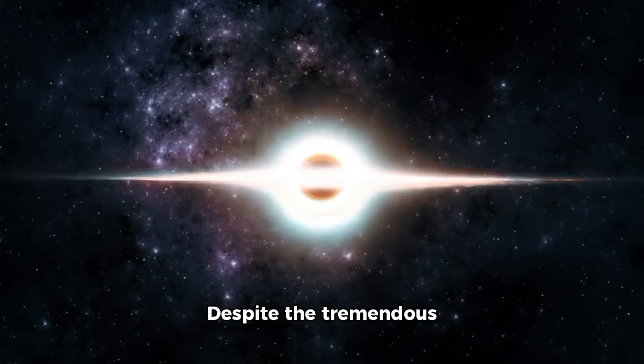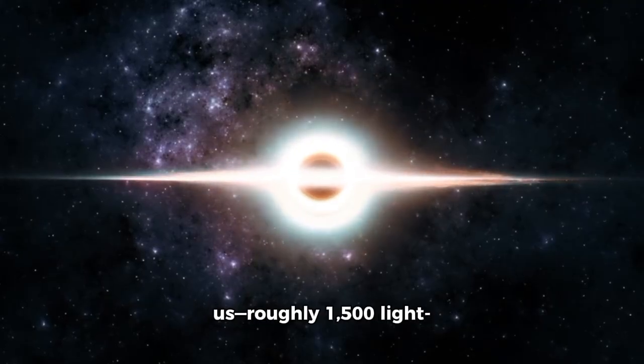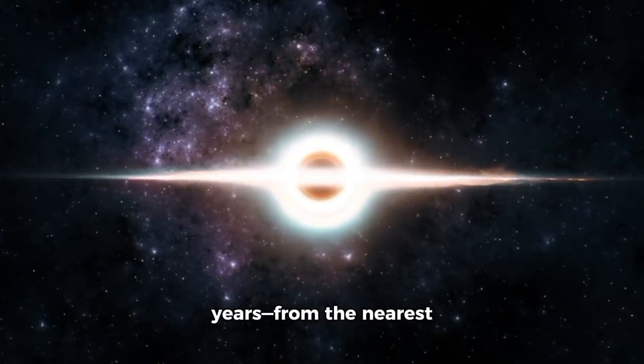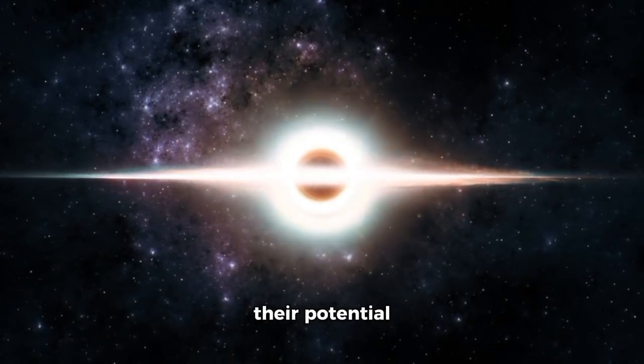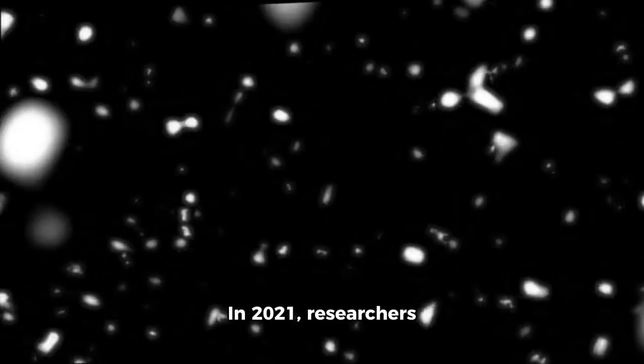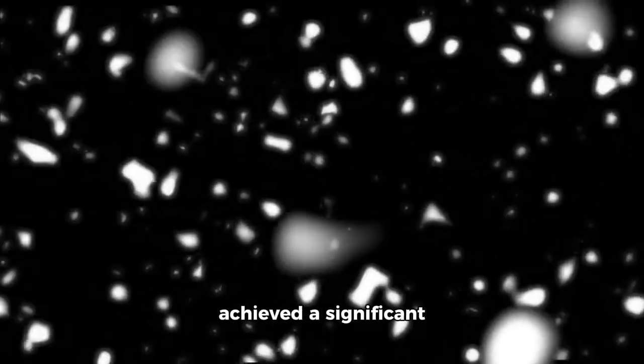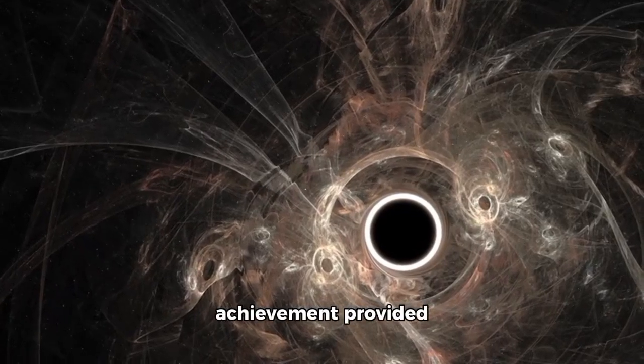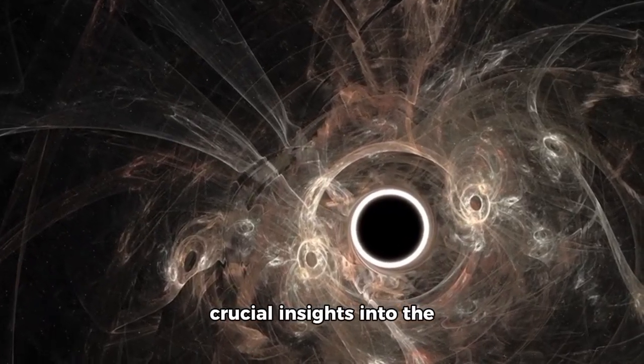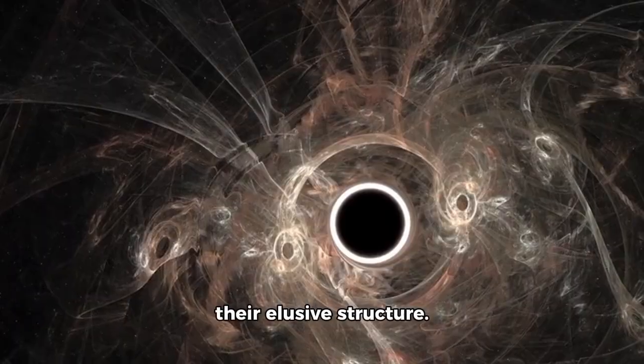Despite the tremendous distance separating us, roughly 1,500 light-years from the nearest black hole, questions and concerns regarding their potential consequences persist. In 2021, researchers achieved a significant advance by capturing the first clear image of a black hole, specifically M87, which is in the center of the M87 galaxy. This remarkable achievement provided crucial insights into the nature of black holes and their elusive structure.